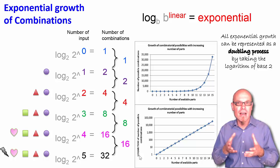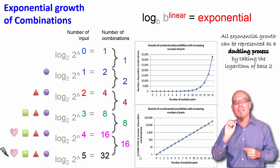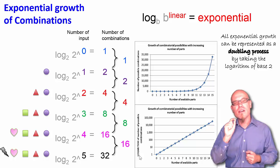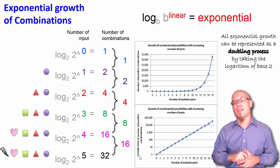That means also that the logarithm that you take, the base of the logarithm that you take, that determines what kind of process you have, what kind of exponential process you are measuring. And all exponential growth can be represented as a doubling process and that's very intuitive. Things just double. So in our case, things just double, 2, 4, 8, 16. So if you take the logarithm of 2, you identify the doubling rate of this process. That's where it comes from.